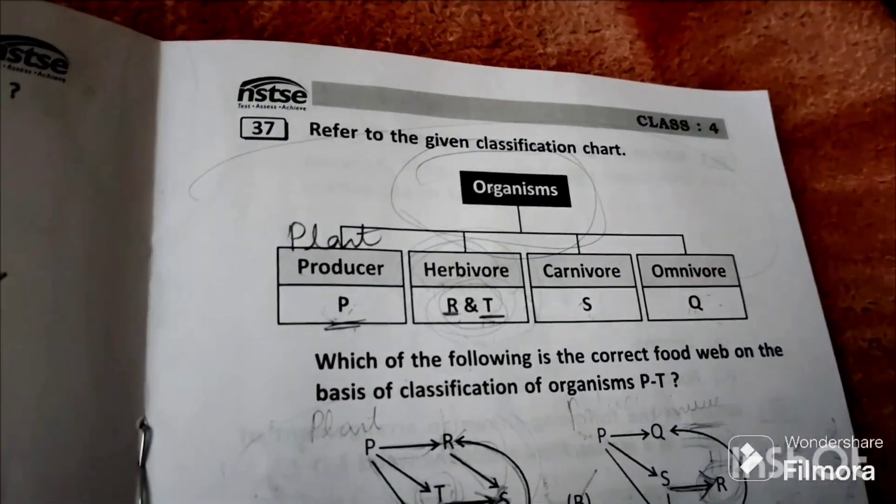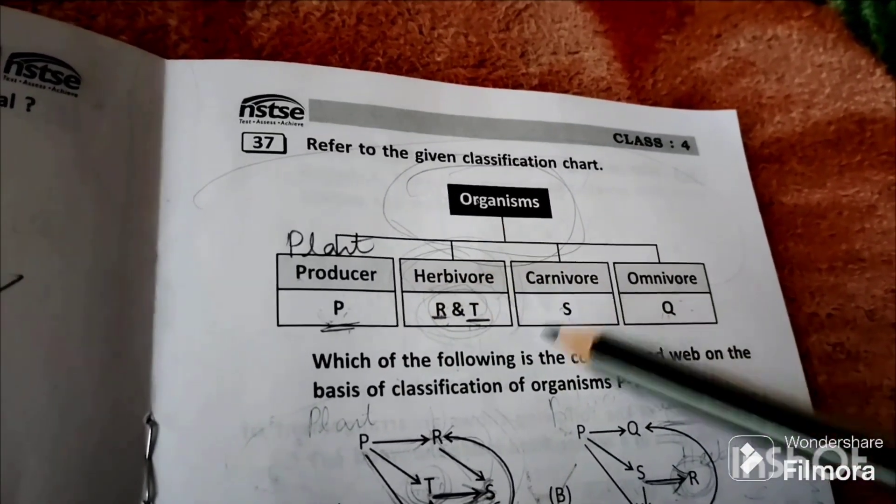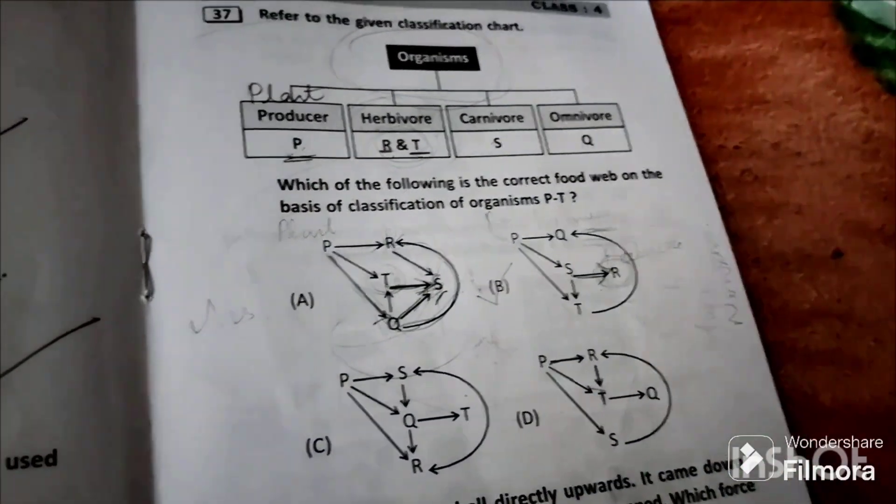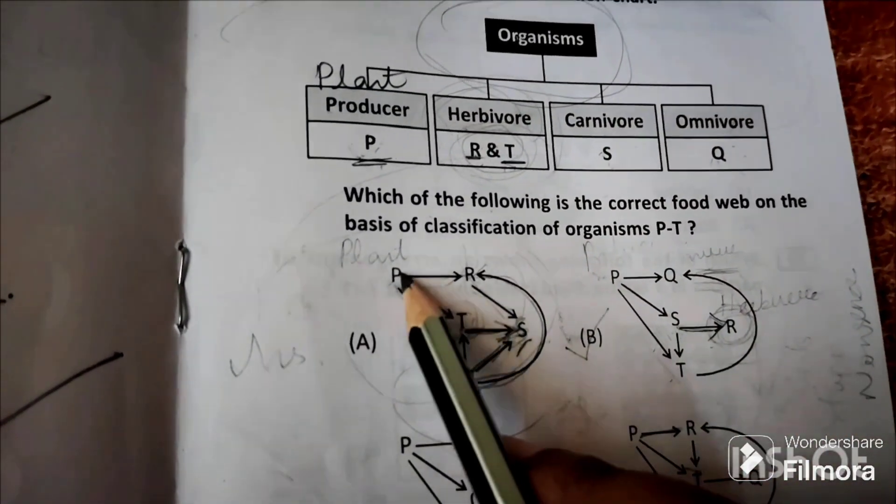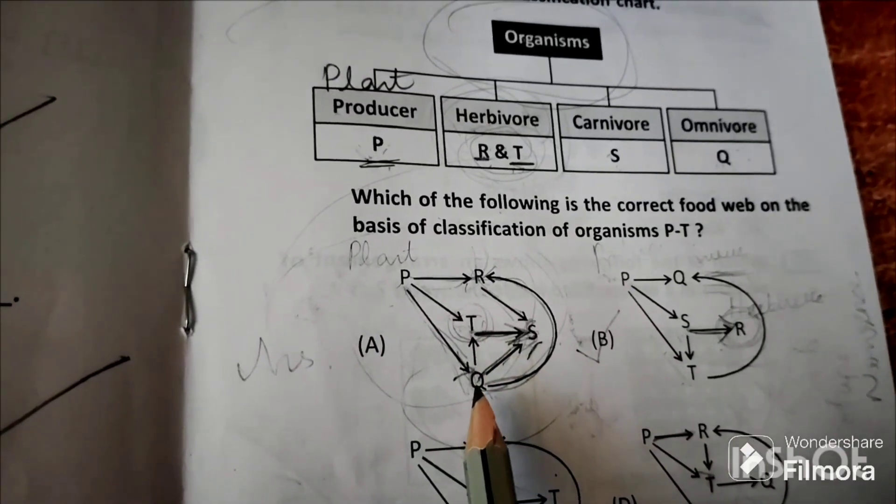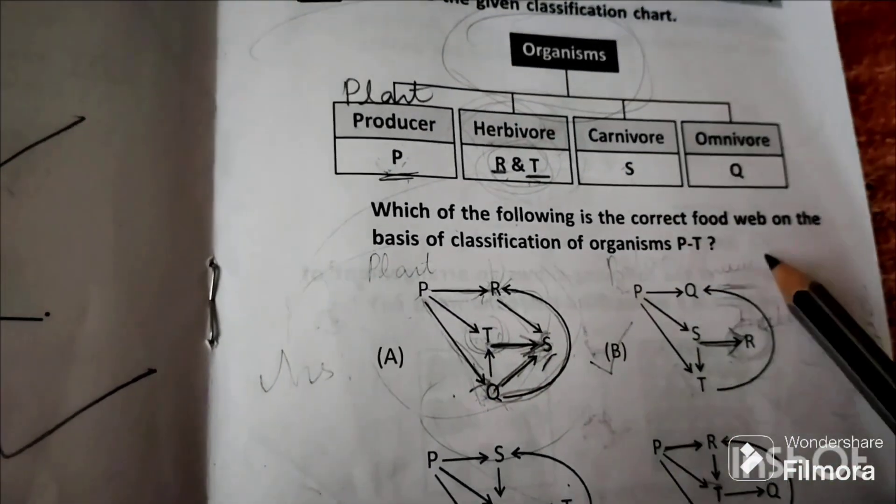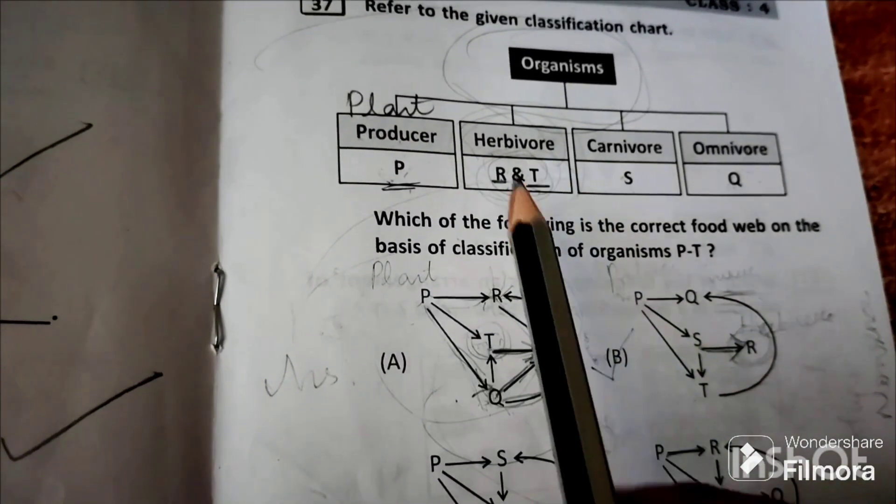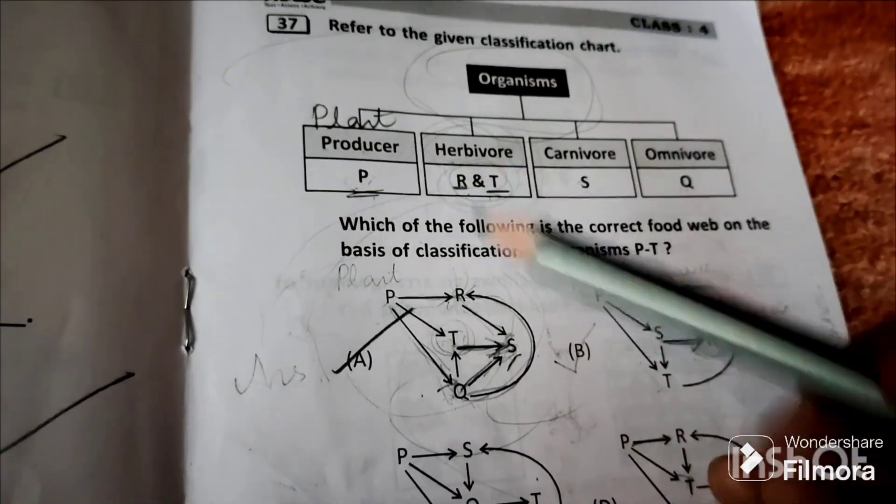Question 37: Refer to the given classification chart. This organism producer plant is a producer. P is herbivores, R and T are carnivores, Q is omnivore. Let's look into option A. P is going as food to R, that is plant is going as food to herbivores, so correct. P is going as food to Q, that is plant is going as food to omnivore, this is also correct. P is going as food to herbivore, so this statement is correct.